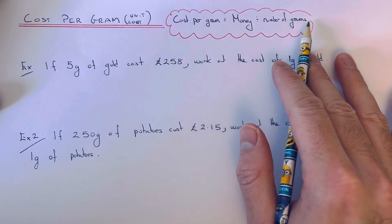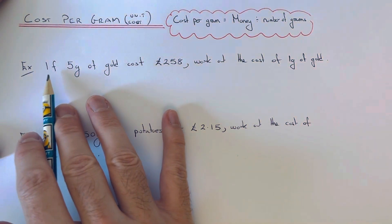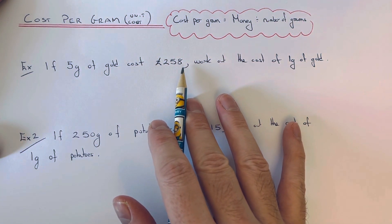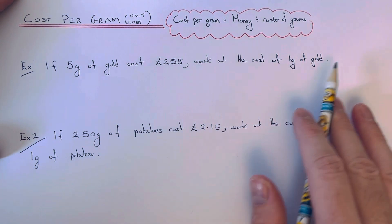Let's have a look at the example here. If 5 grams of gold cost £258, work out the cost of one gram of gold.